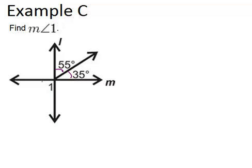And angle 1 is a vertical angle with this whole angle over here. Because it is formed by two intersecting lines, and they're opposite from each other. So 55 degrees plus 35 degrees is 90 degrees.